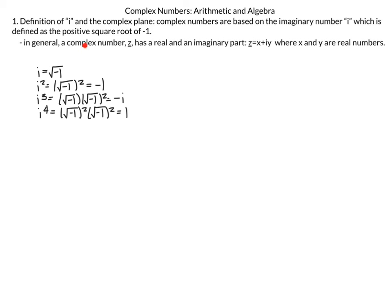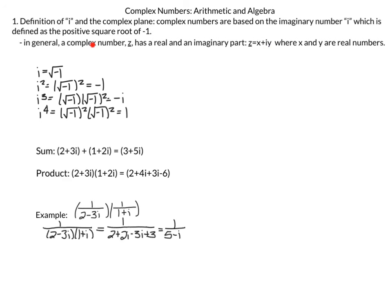A complex number, which we designate with a z underscore, has a real and imaginary part: z equals x plus iy, where x and y are real numbers. For example, for 2 plus 3i, the 2 is the real part and 3 is the imaginary part because it's multiplied by i.